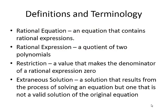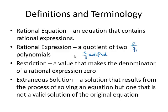We now turn our focus on solving rational equations. A rational equation is an equation that contains rational expressions, and a rational expression is just a quotient of two polynomials. Recall that division by zero is undefined, so when we have variables in the denominator, we must concern ourselves with what values make the denominator zero. The values that make the denominator zero are called restrictions.